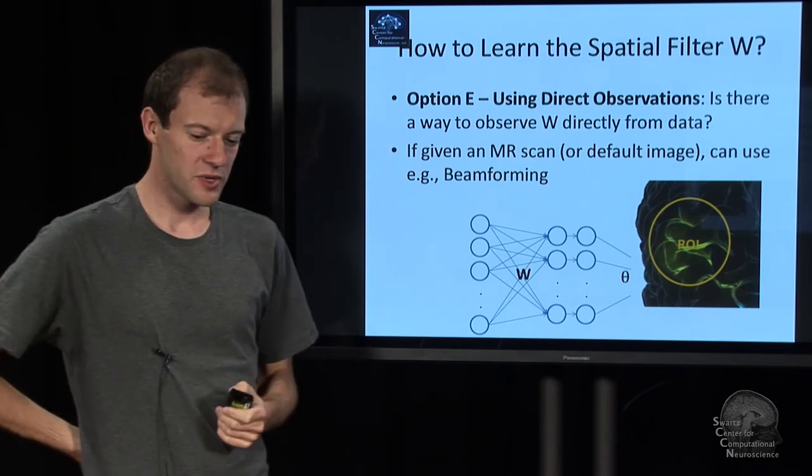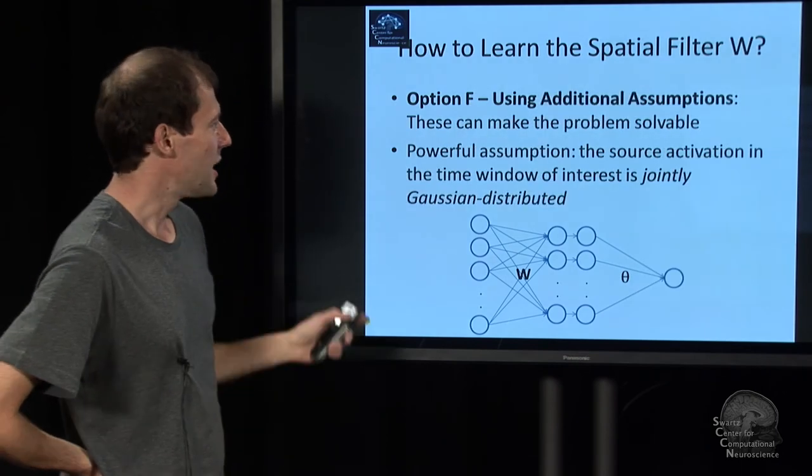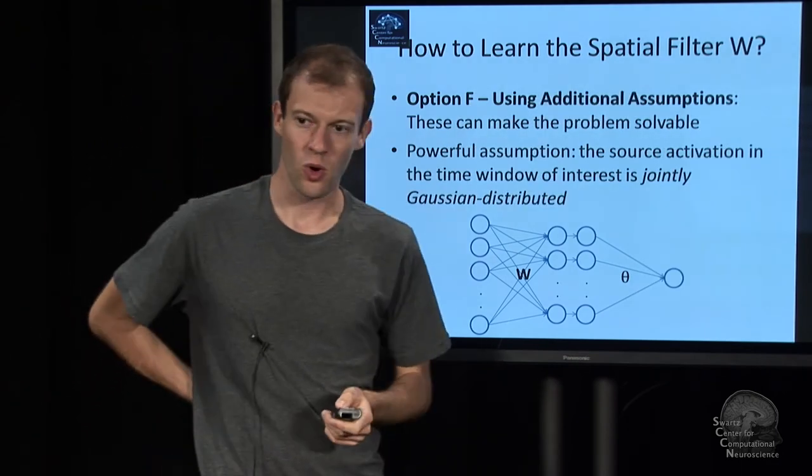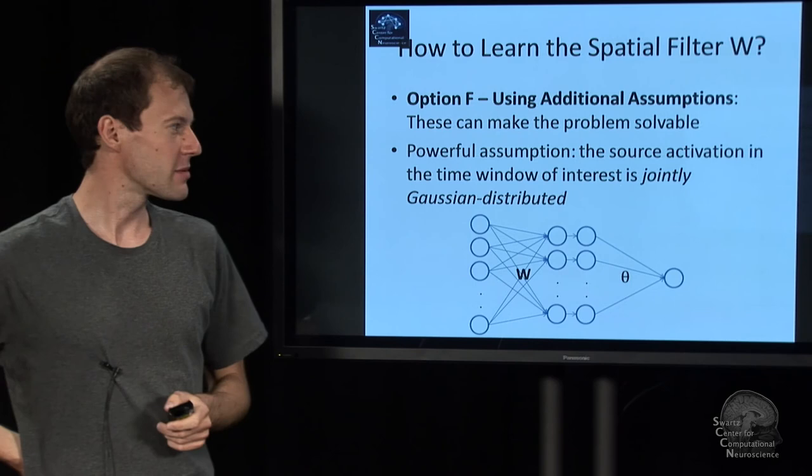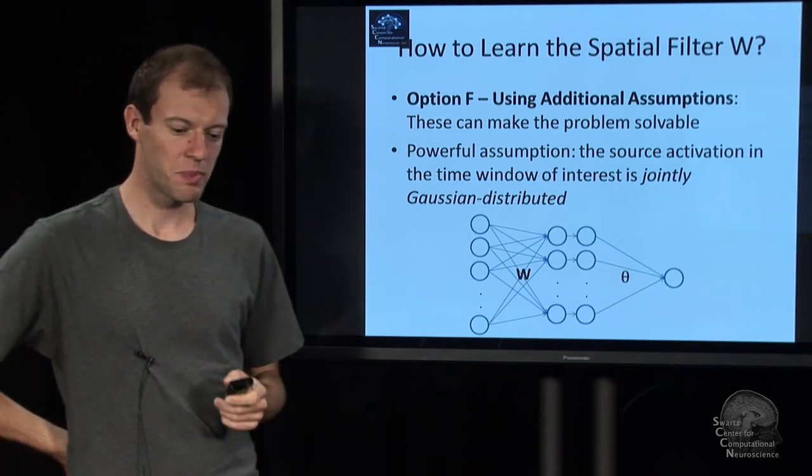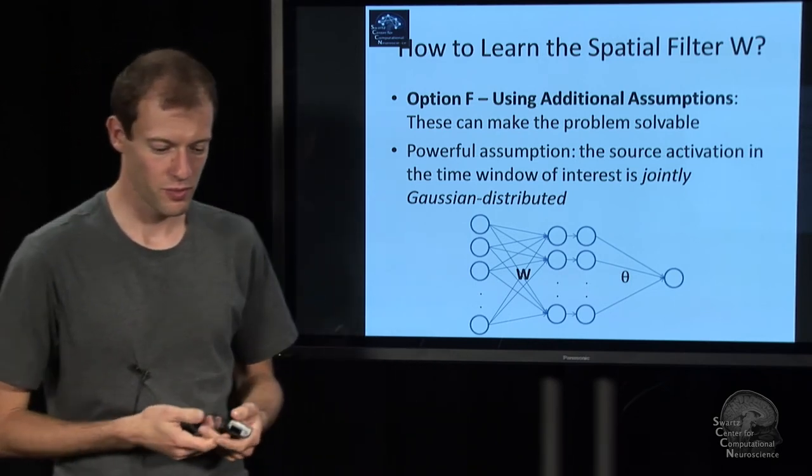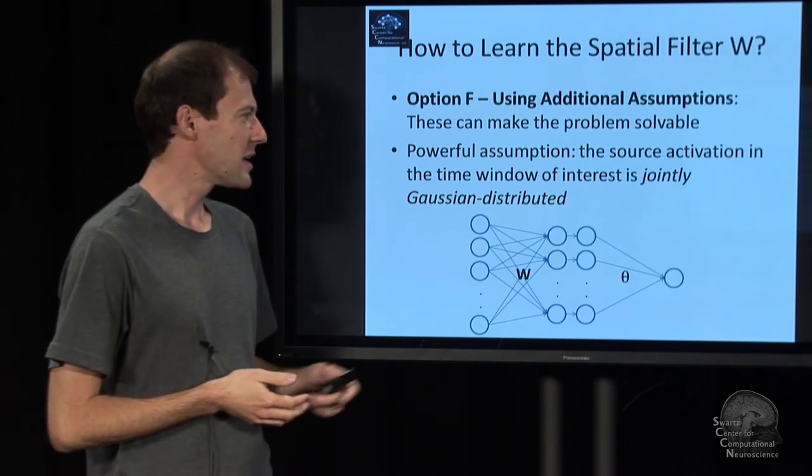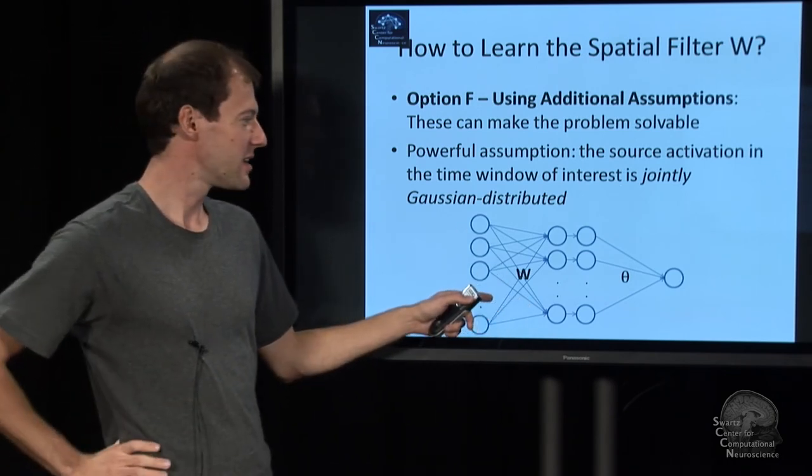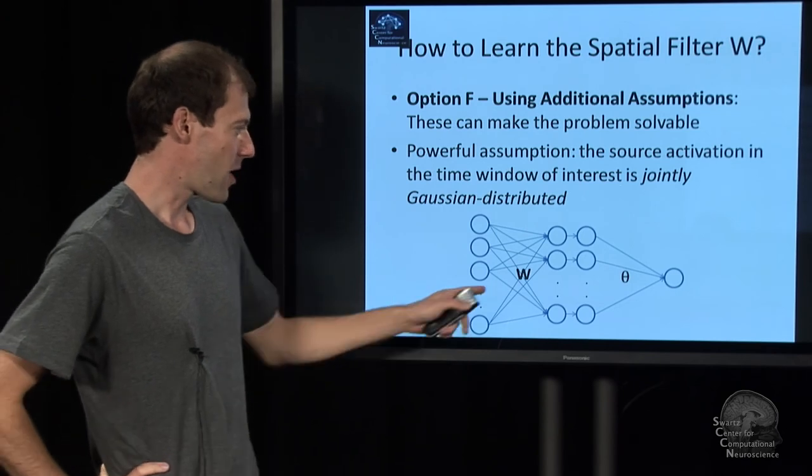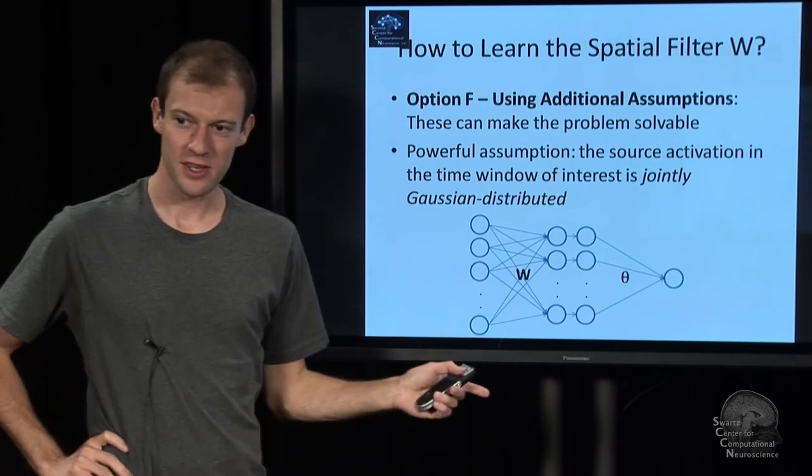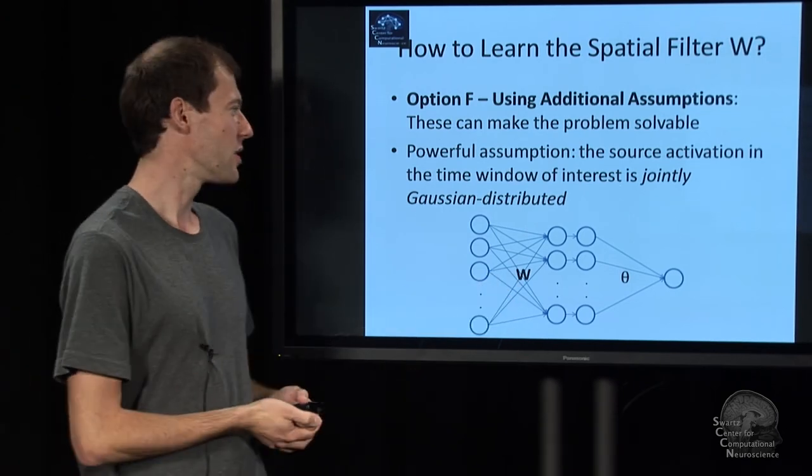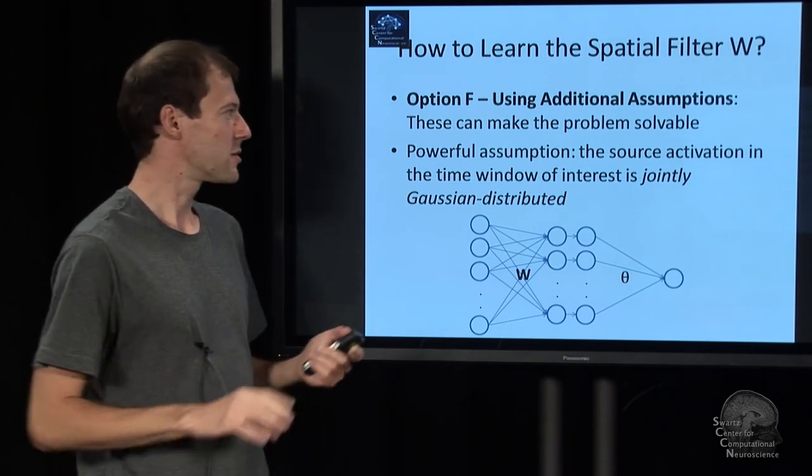So none of that is really all that satisfying. And there is one more approach. It's also not perfect, but it's the one that basically works best empirically in the brain-computer interface field. That is, make enough extra assumptions on the data so that our problem of deducing W becomes analytically solvable or in some sense tractable.